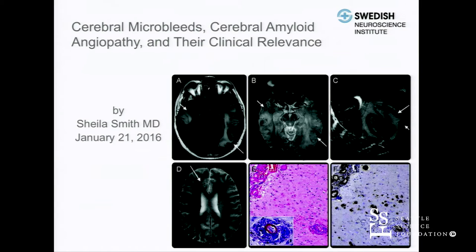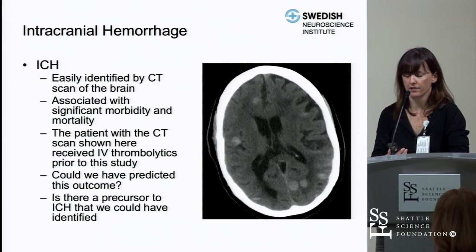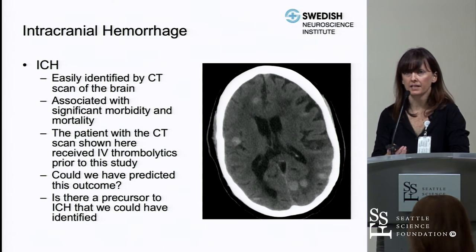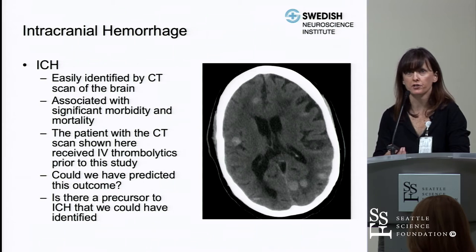I thought I'd start out with a patient that I came across during my quality review. This is a patient that was on our neurohospitalist service admitted with intracranial hemorrhage. The patient had actually been transferred to us from another facility. On the right-hand side of the screen you see a head CT with multiple areas of hyperdensity, which are intracranial hemorrhages.